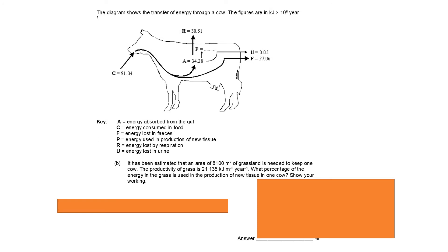This is the second part of the same question. It tells us that it's been estimated that an area of 8,100 metre square of grassland is needed to keep one cow and the productivity of grass is 21,135 kilojoules per metre square per year. So we can use those two numbers to work out the number of kilojoules needed to keep one cow would be the 21,135 times 8,100 metres squared. So that's going to give us the bottom of our fraction. And then the top of our fraction is going to be the energy used in production of new tissue.